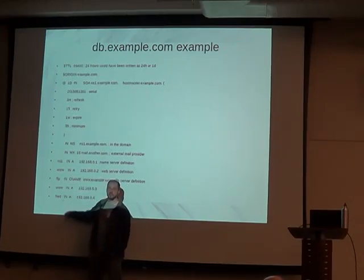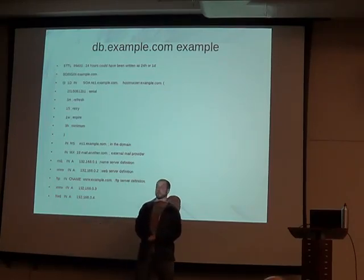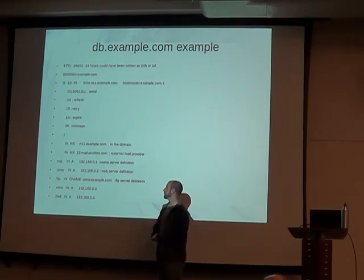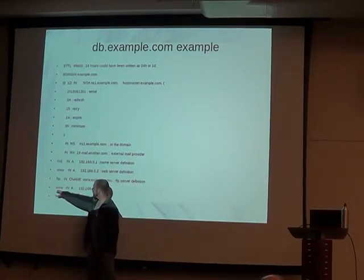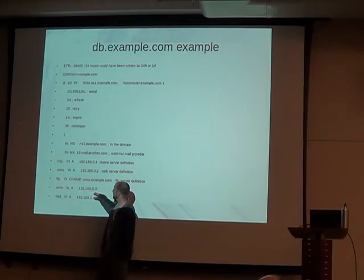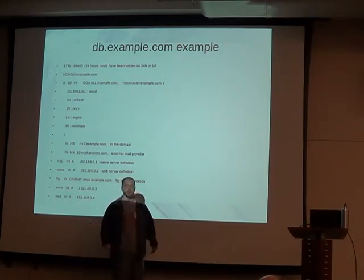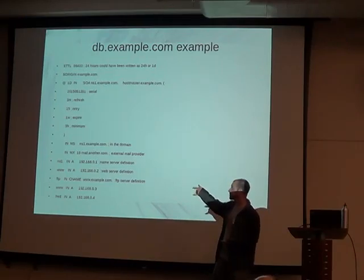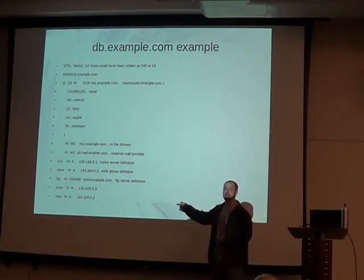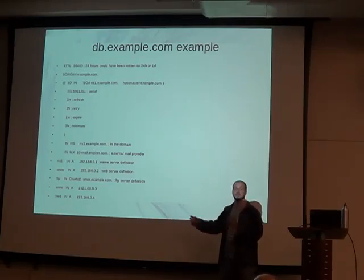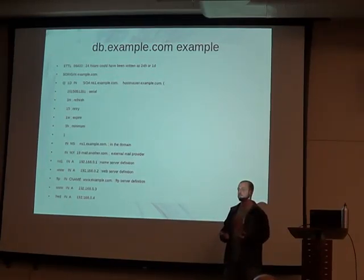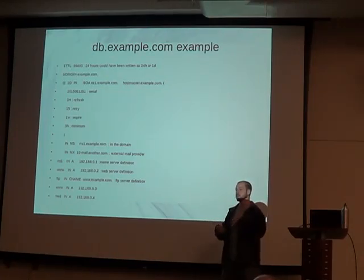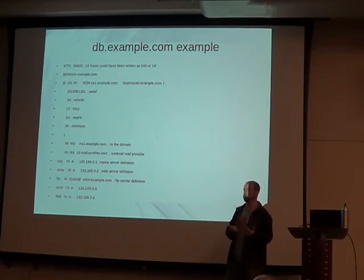One of the things that DNS does is round robin. Here we have a www again with a different IP address. So when we look up www, which IP address should we get? The DNS server will actually round robin between the two, and every time it's asked it will give the one it did not just give before.